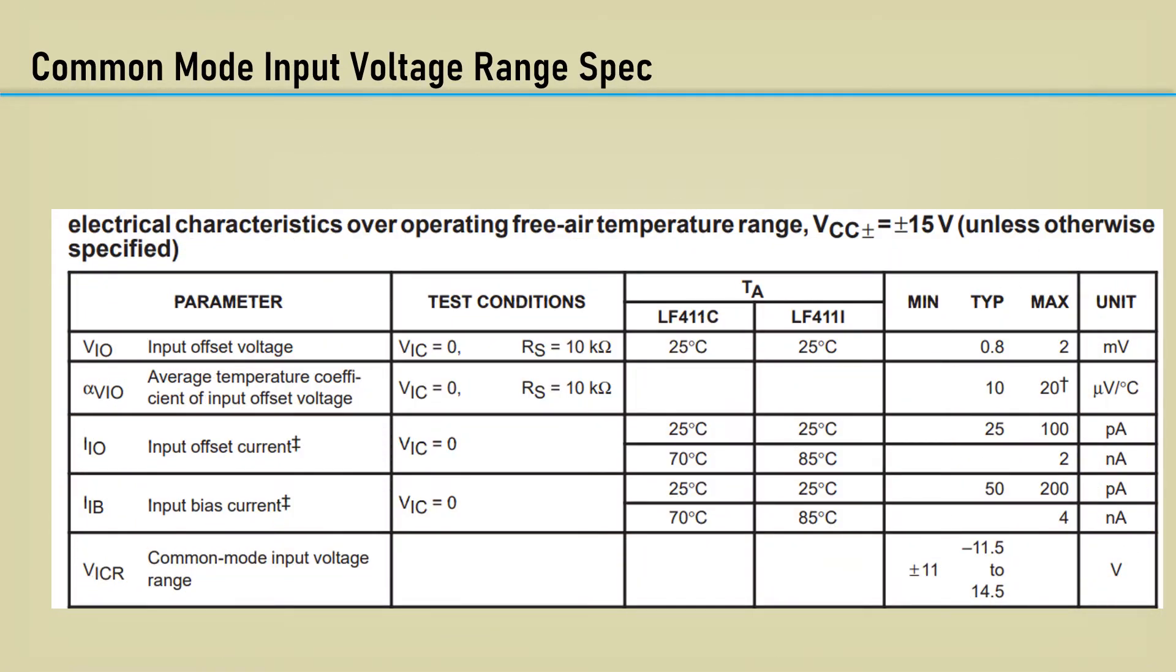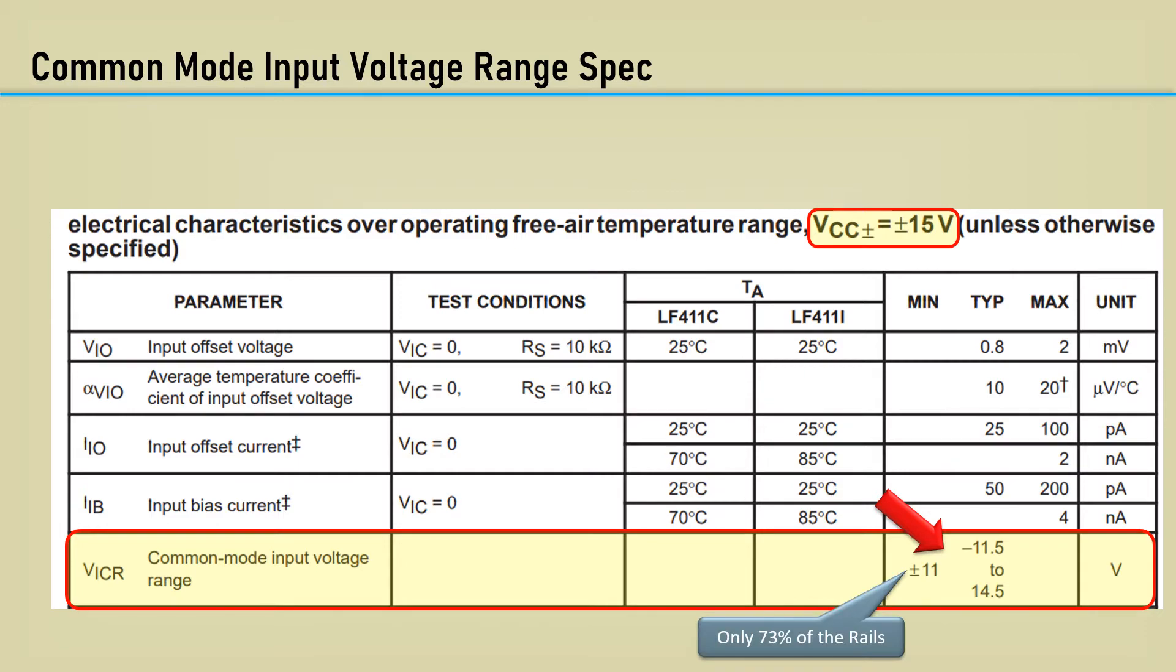Here's the page of the spec that has the common mode input voltage range. This is the operating characteristics for a plus or minus 15 volt power input. The common mode input voltage range on the negative side only goes down to minus 11.5 volts typical, with minus 11 volts as the minimum.